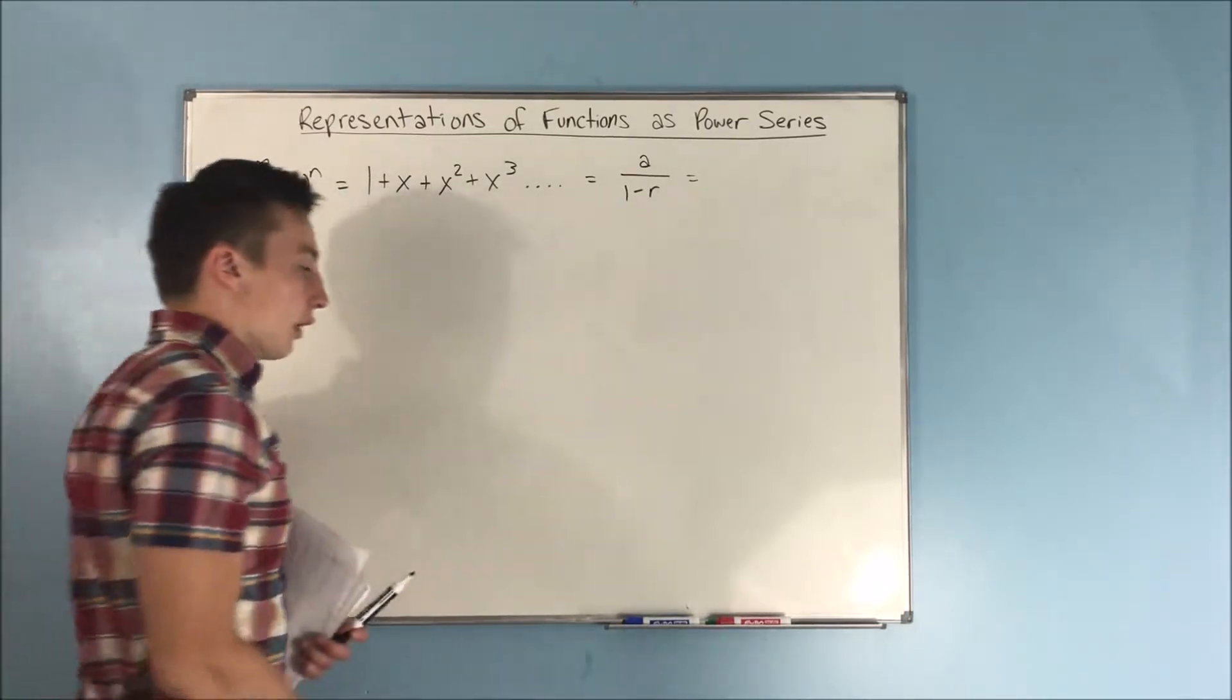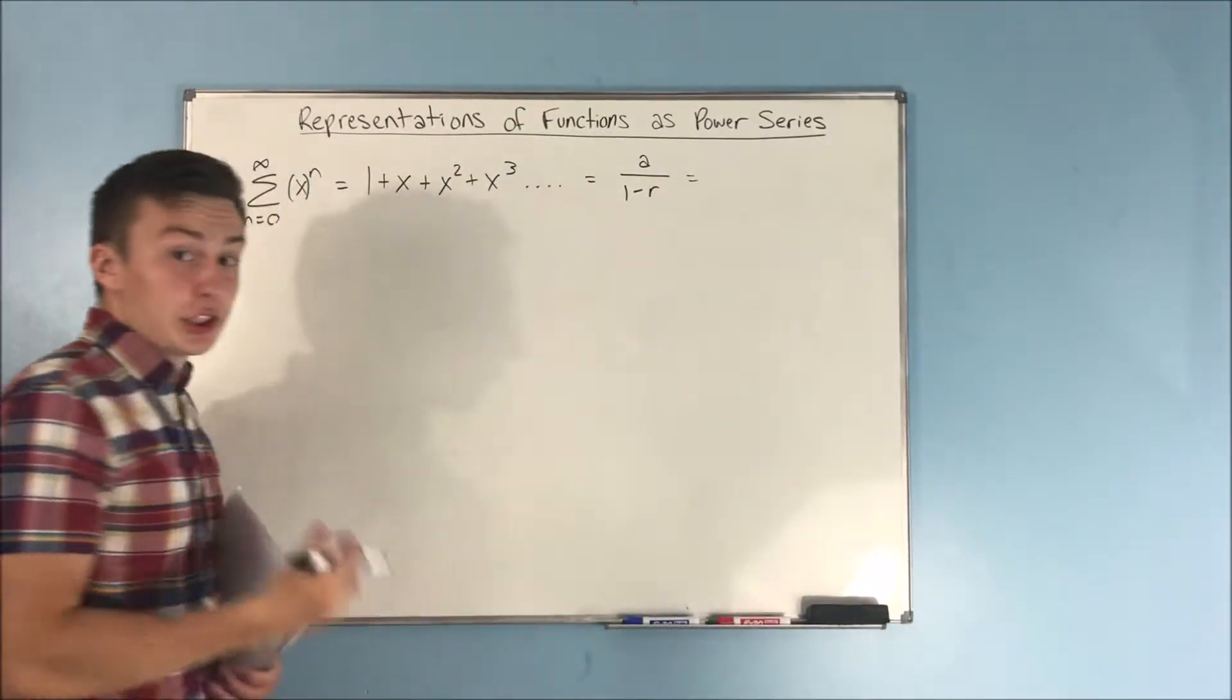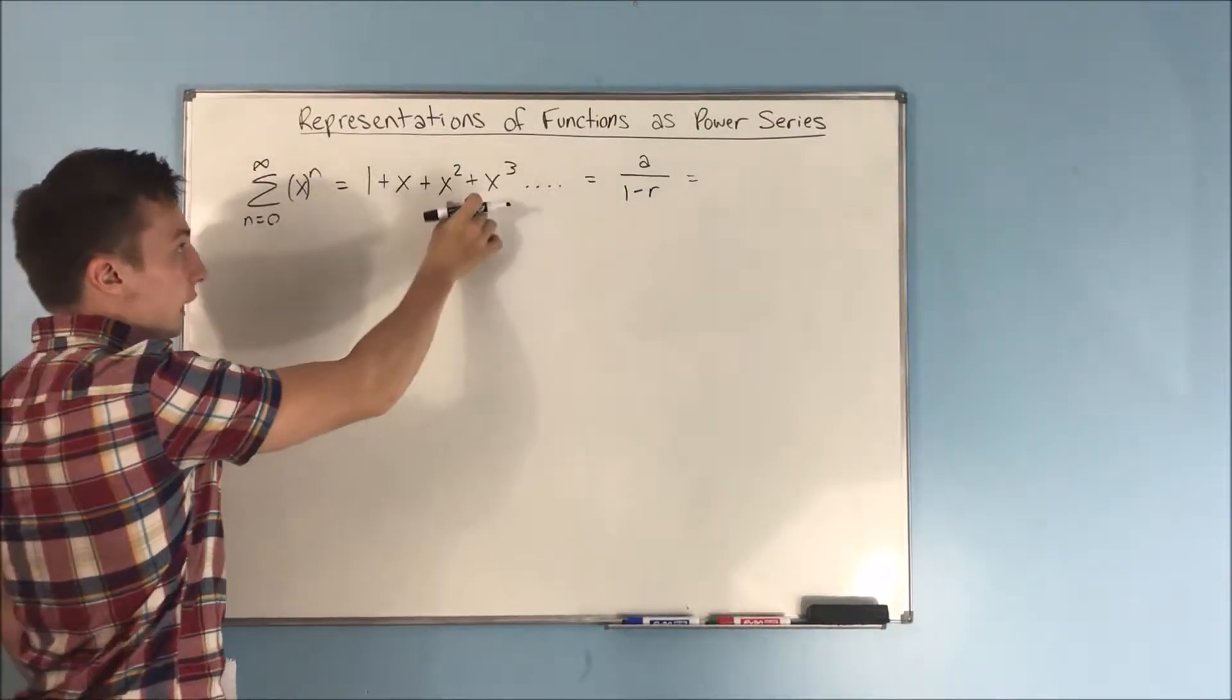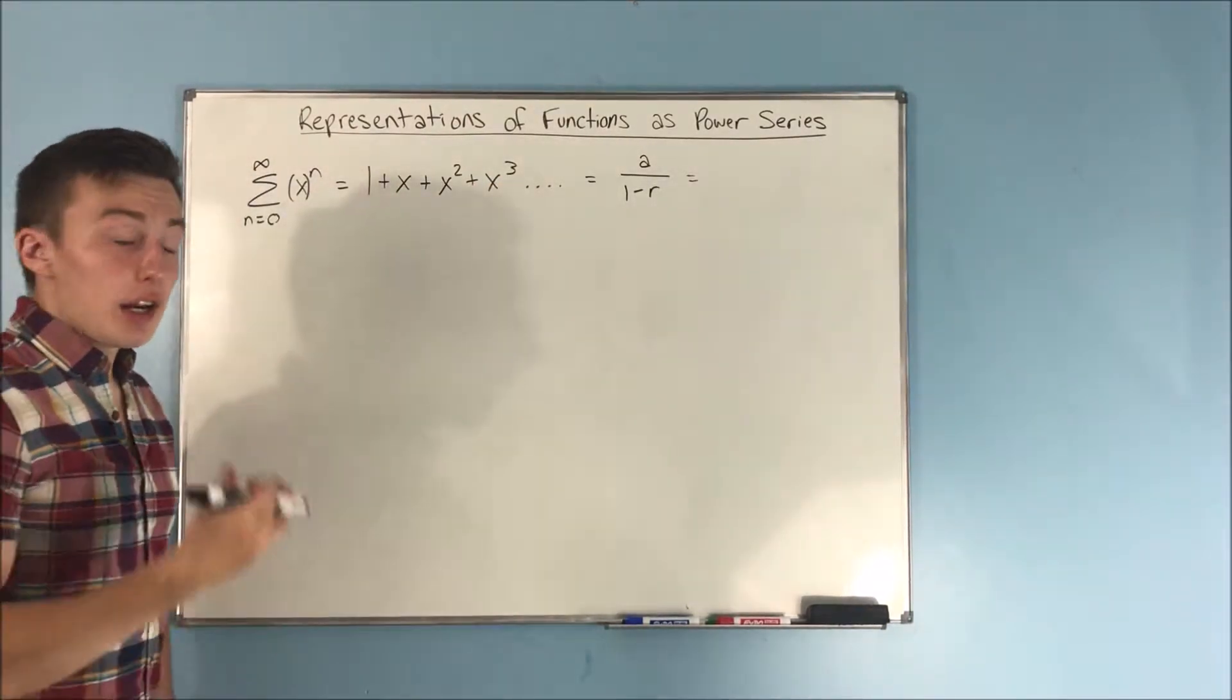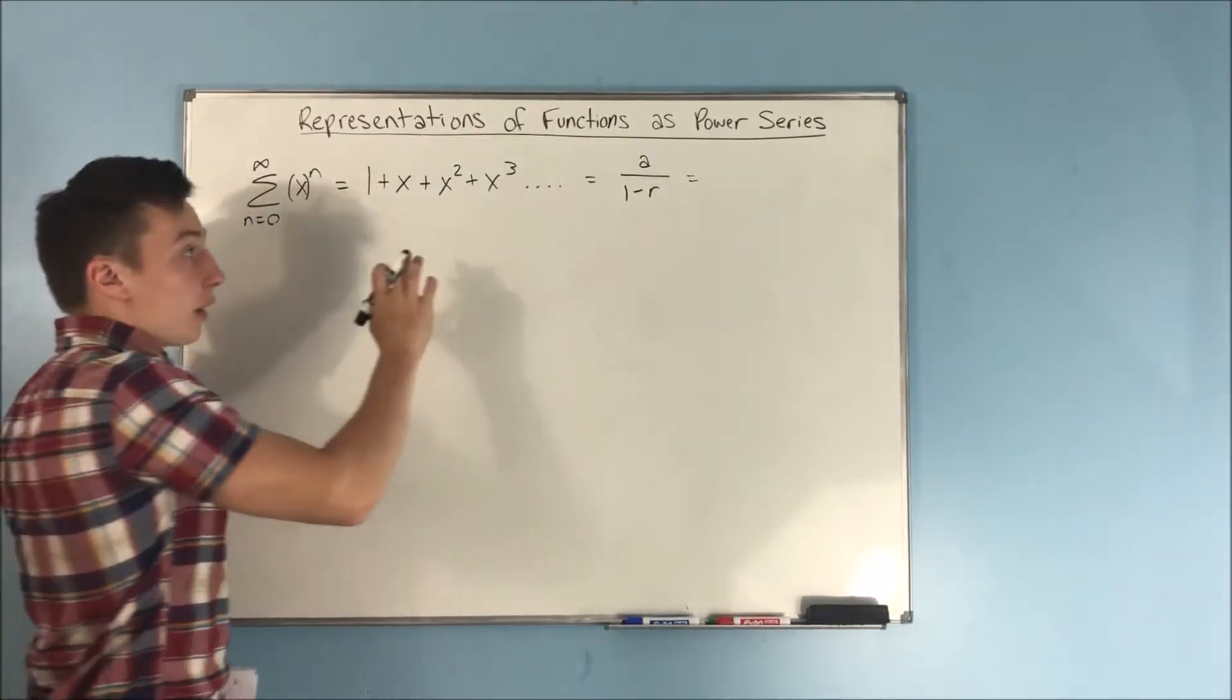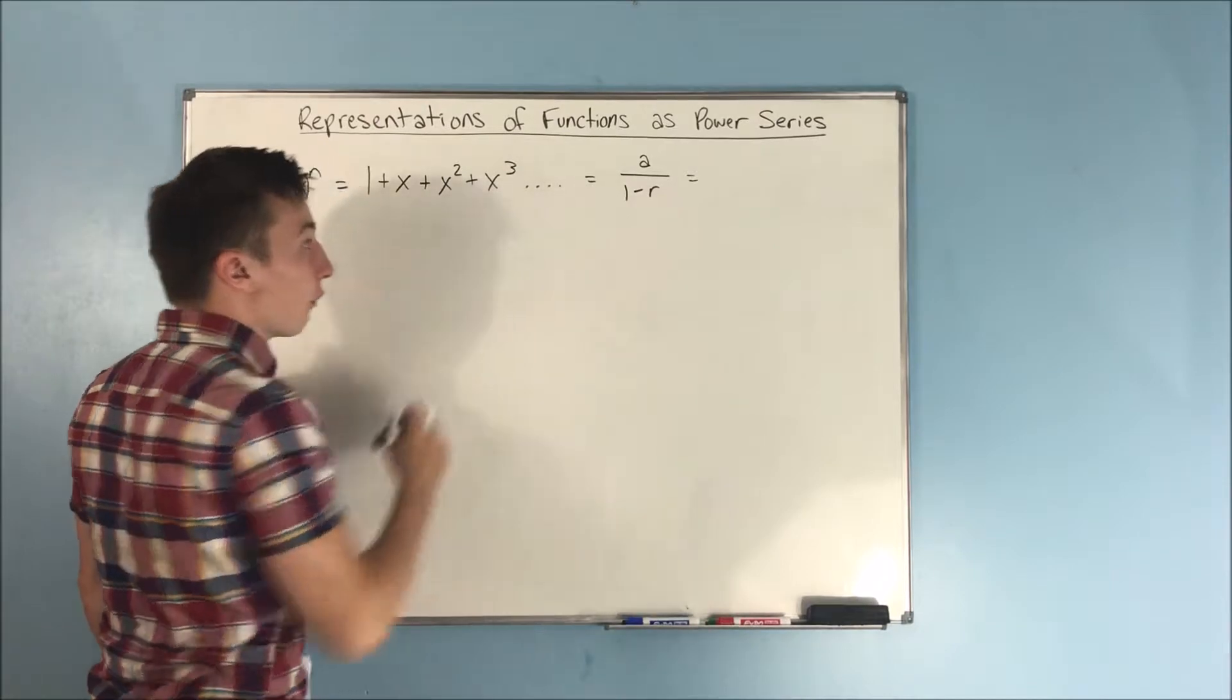Now that we're good with that, if we start listing out terms for this geometric power series, you'll see here that we get 1 plus x plus x squared plus x cubed, on and on and on. Now for the x values where this is convergent, your sum is going to be a over 1 minus r.